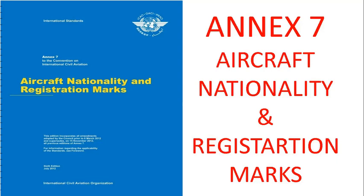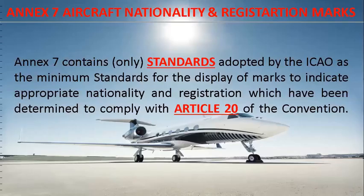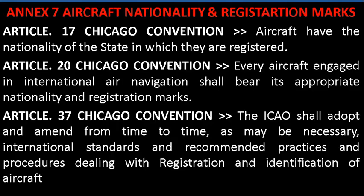Prefix codes are based upon radio call signs allotted by the International Telecommunication Union to each state. This code must also appear in the certificate of aircraft registration, which is issued by the relevant civil aviation authority. An aircraft can have only one registration in one jurisdiction, though it is changeable over the life of the aircraft. Article 20 of the Chicago Convention requires all aircraft to be registered and to carry a nationality mark and a registration mark. Annex 7 of the Chicago Convention covers aircraft nationality and registration marks and contains only standards without any recommendations.